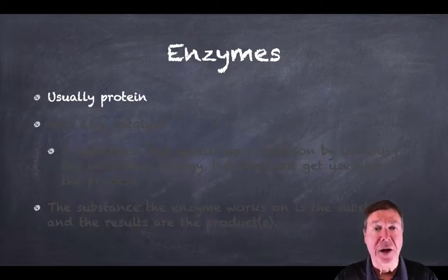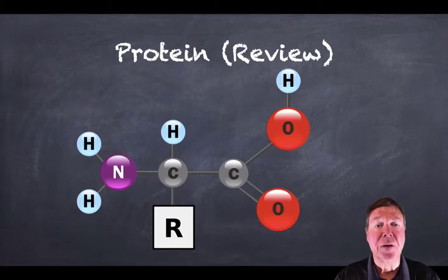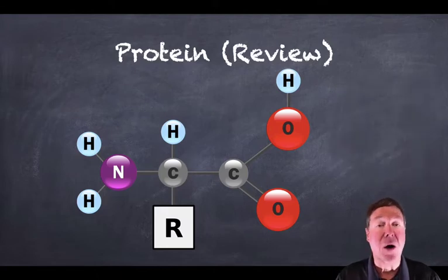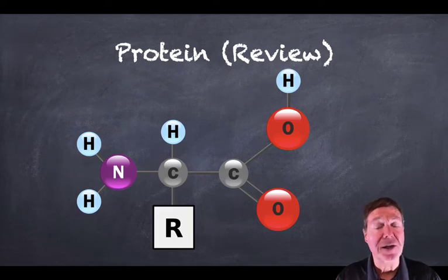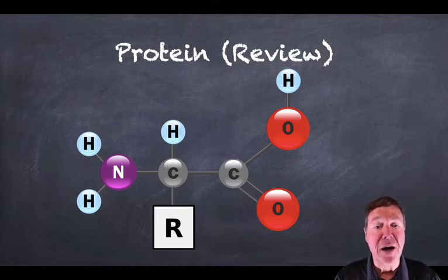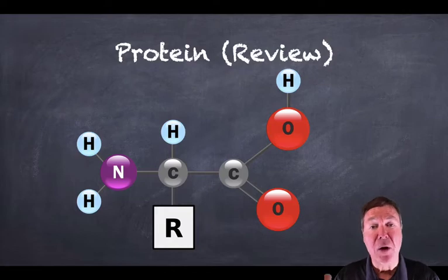First of all, it's usually a protein. Quick review. Proteins, as you remember, are a biochemical that has a central carbon surrounded by a carboxyl group on one side, a nitrogen group on the other, and then the R group, the side chain. There are 20 side chains, 20 things that make each amino acid different. And it's the string of amino acids that we put together that makes the protein. Enzymes are protein, so they're made of chains of amino acids.